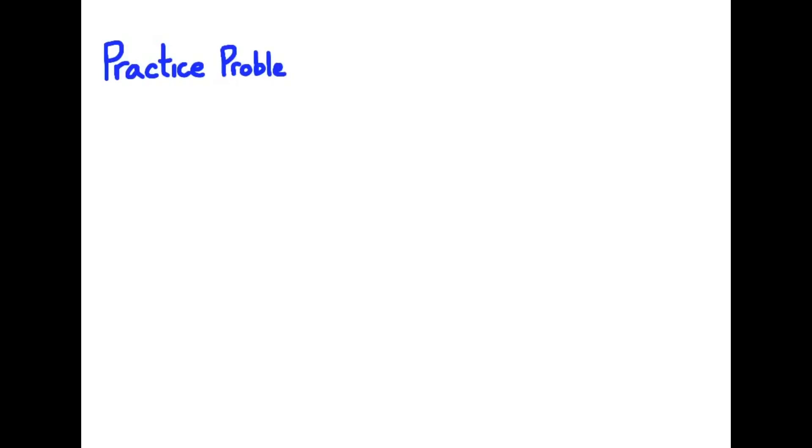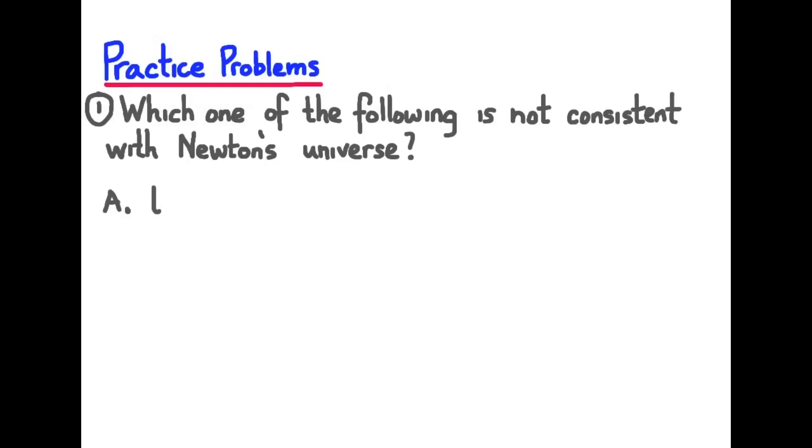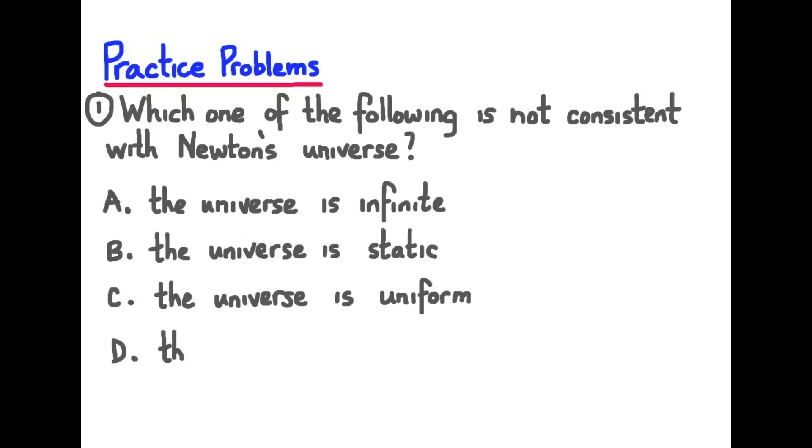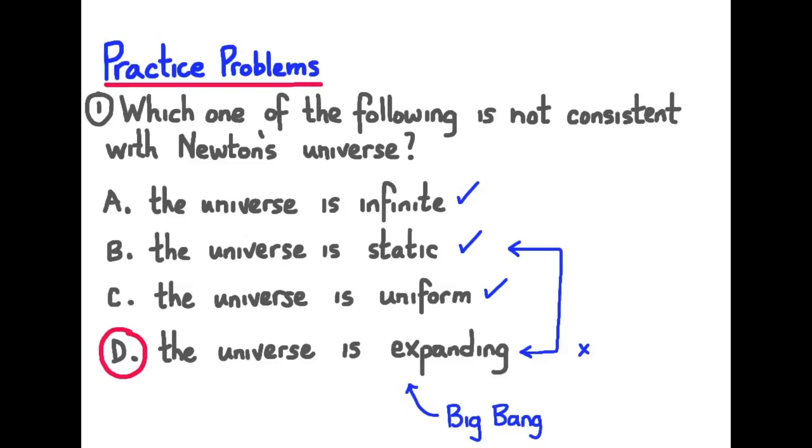Practice problem number one. Which one of the following is not consistent with Newton's universe? The universe is infinite. The universe is static. The universe is uniform. The universe is expanding. Pause your viewer and try this question. B and D are mutually exclusive here, so that should tip us off looking carefully at one of these two. Newton's model of the universe included infinite, static, and uniform. So A, B, and C are consistent. Our answer here is D. The universe is expanding as part of Big Bang Theory.